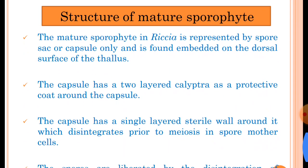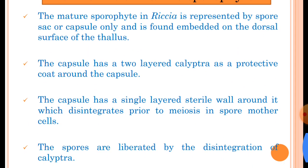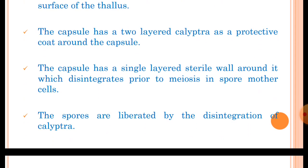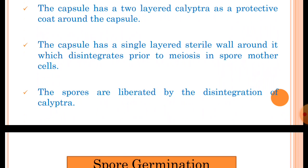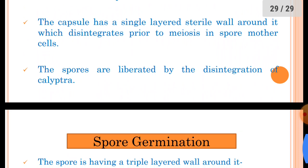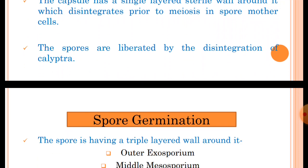The mature sporophyte in Riccia is represented by the spore sac or capsule only. In general, in bryophytes the sporophyte is differentiated into three parts — foot, seta, and capsule — while in Riccia the mature sporophyte has only the capsule; foot and seta are absent. The capsules are found on the dorsal surface of the thallus. The capsule has a two-layered calyptra as a protective coat, formed by the wall of the venter of the archegonium. The capsule has a single-layered sterile wall which disintegrates prior to meiosis in spore mother cells, and the spores are liberated by the disintegration of the calyptra.